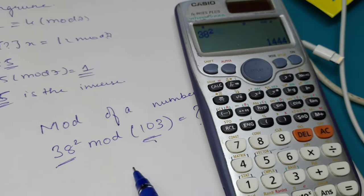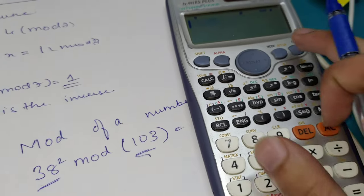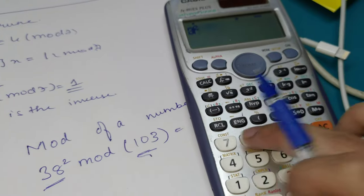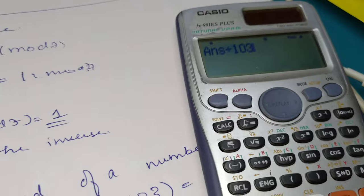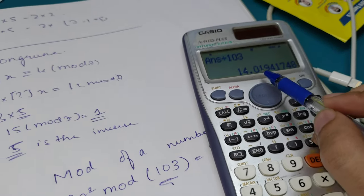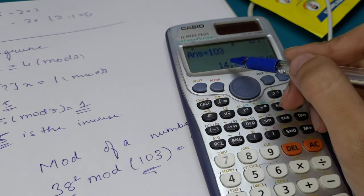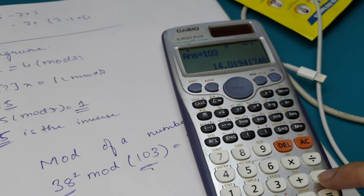Now whatever mod value you have - 38 square divided by 103 - we get 14.01. Now whatever we get here, 14, the left side of the decimal, that we need to use.